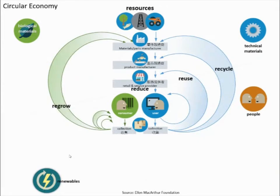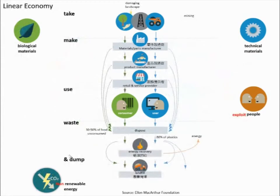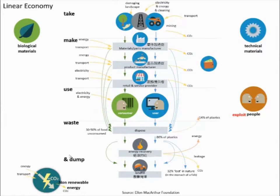Circular economy is the antonym and the counter movement from the current conventional economy, which is a linear economy — taking too much from nature and dumping too much into nature. When we're taking and making things, we're also using a lot of energy, which causes more carbon dioxide and contributes to greenhouse climate change.